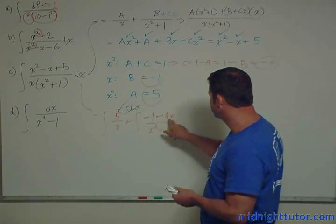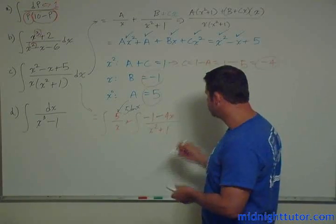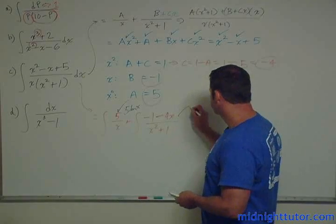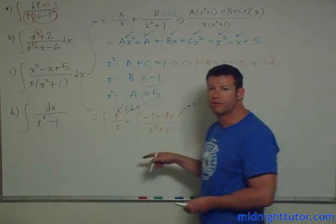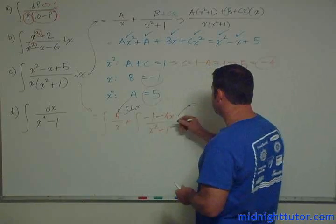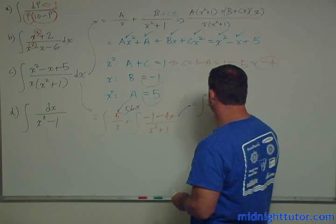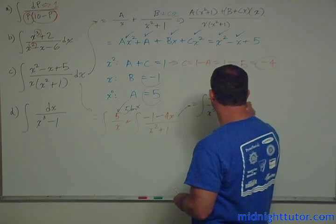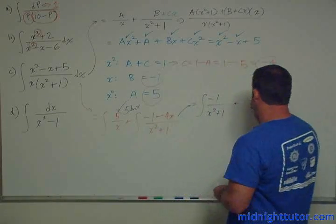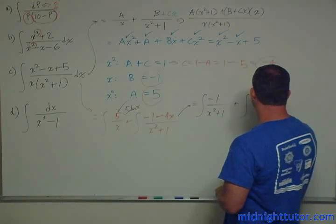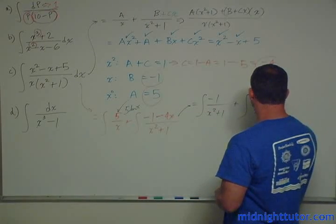This one here, minus 1 minus 4x over x squared plus 1. Well, this is the same as saying, we just take the numerator and take each term over the denominator independently. This is the same as integral of minus 1 over x squared plus 1 plus integral of minus 4x over x squared plus 1.